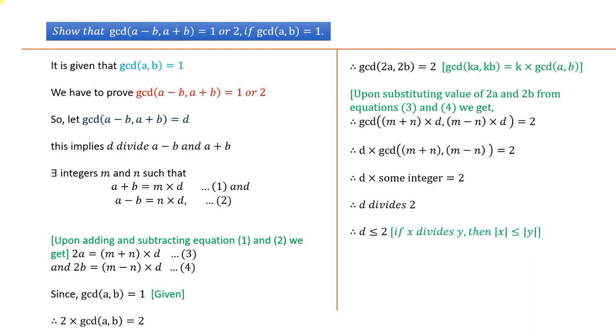Therefore, d is an integer which is less than or equal to 2, because if a number divides another number, then the number is less than or equal to another number.